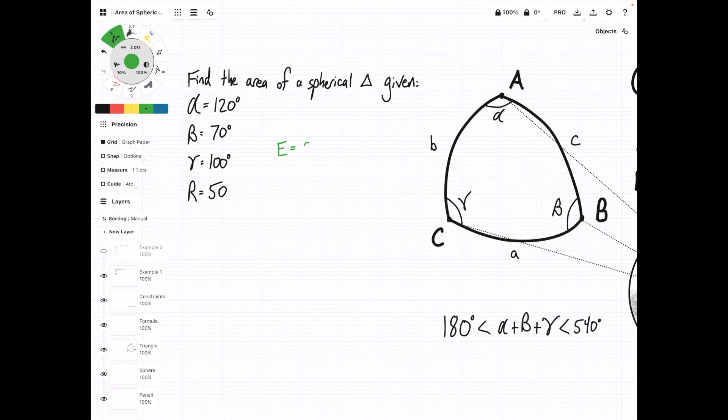What we're going to do here is first find this spherical excess. E is equal to alpha plus beta plus gamma minus pi. But we see that we're given all of our angle values in degrees, so what we'll need to do is update our area equation just a little bit.